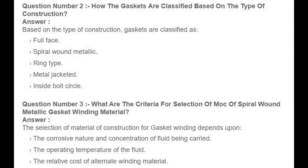Question number 2: How are gaskets classified based on the type of construction? Answer: Based on the type of construction, gaskets are classified as full face, spiral wound metallic, ring type, metal jacketed, and inside bolt circle.